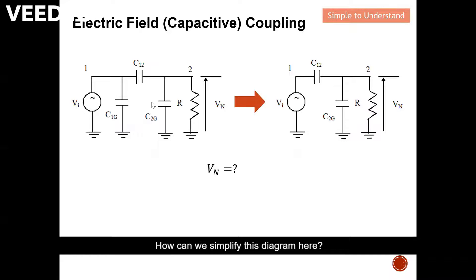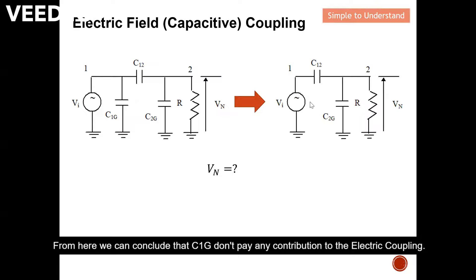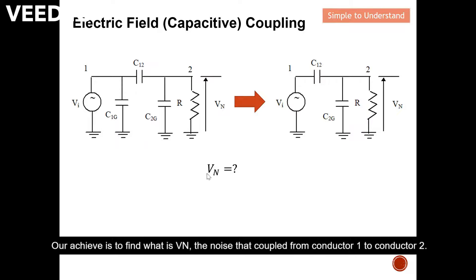How can we simplify this diagram? Since the source is in parallel with capacitor C1G, we can actually remove C1G. From here we can conclude that C1G does not play any contribution to the electric field coupling. Our objective is to find VN — the noise that coupled from conductor 1 to conductor 2.